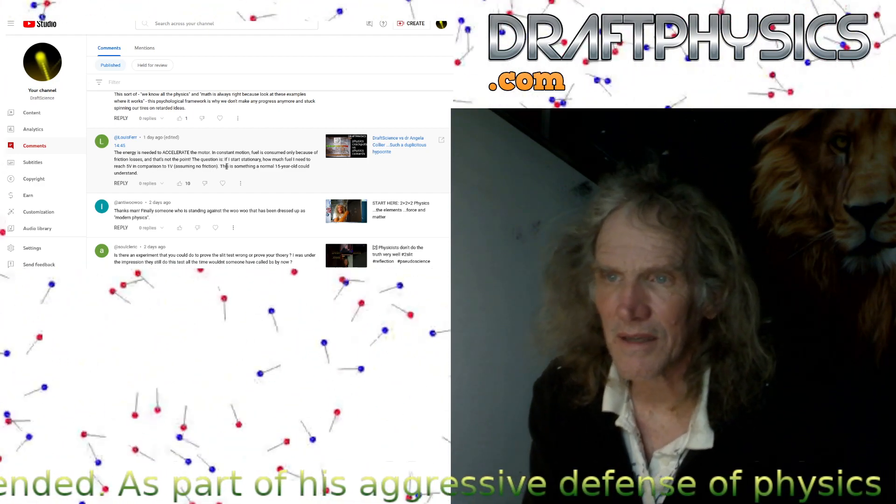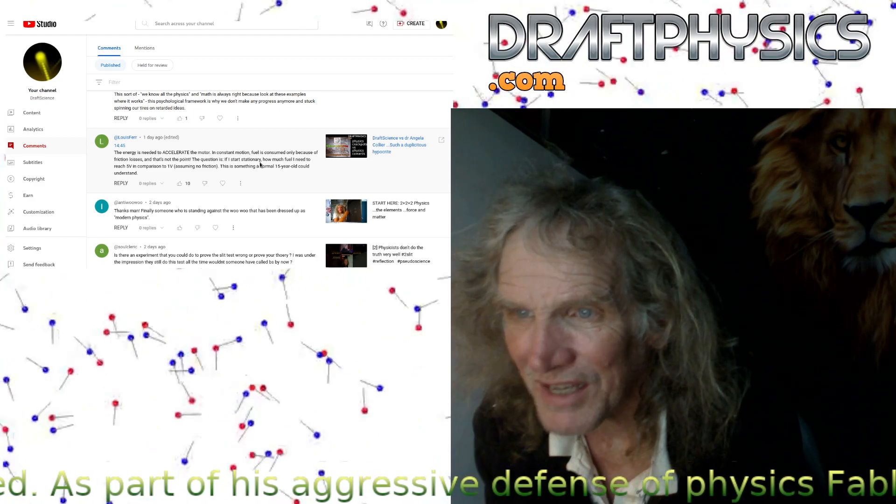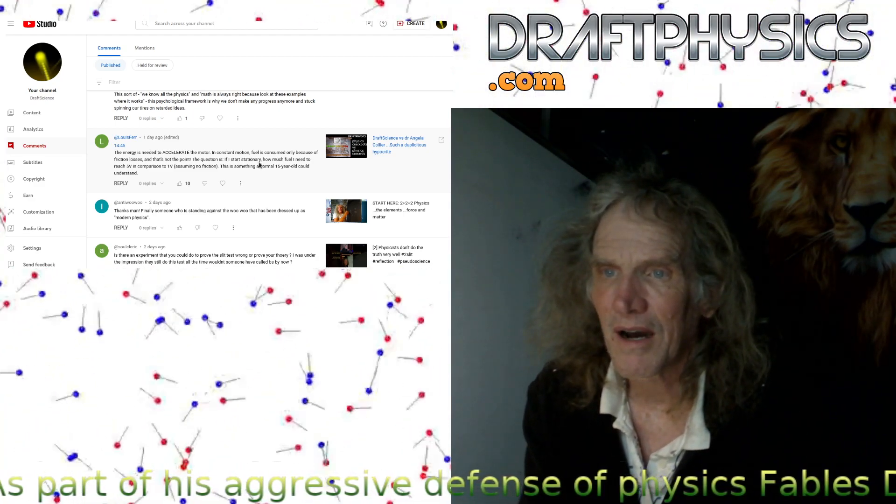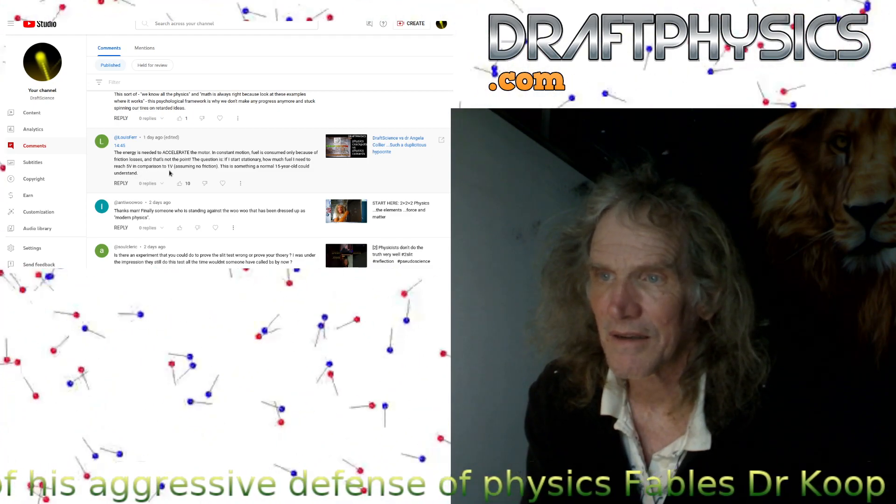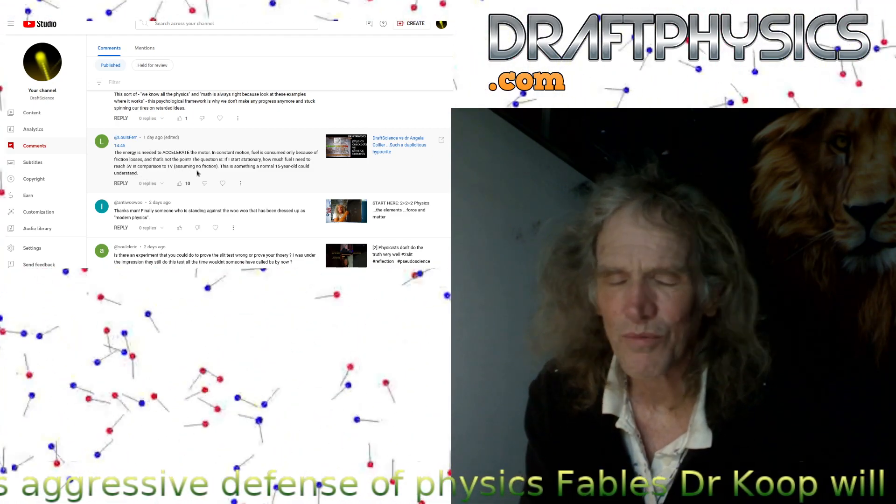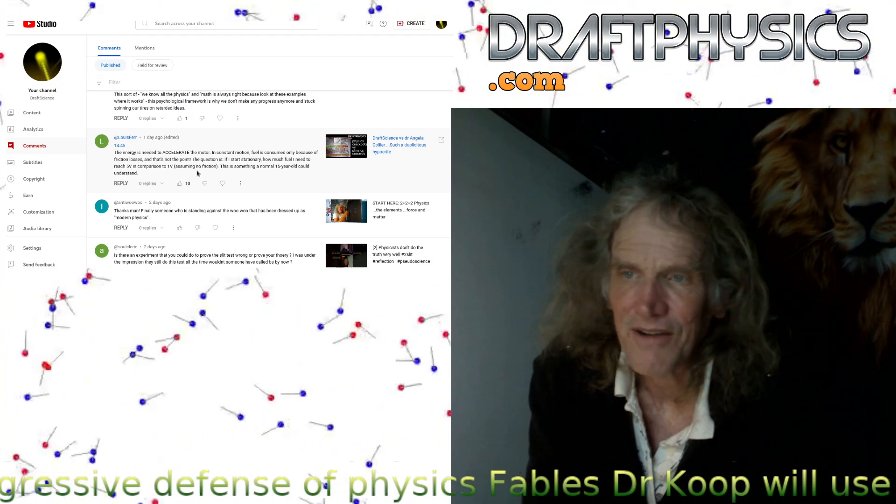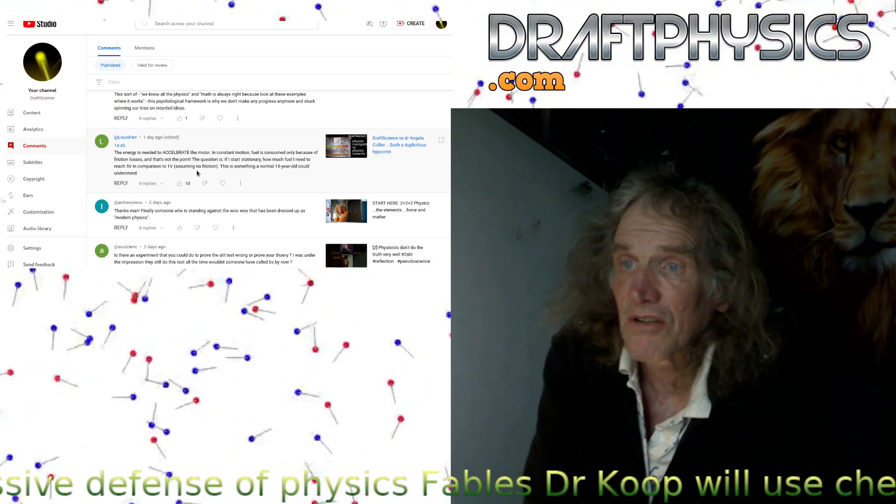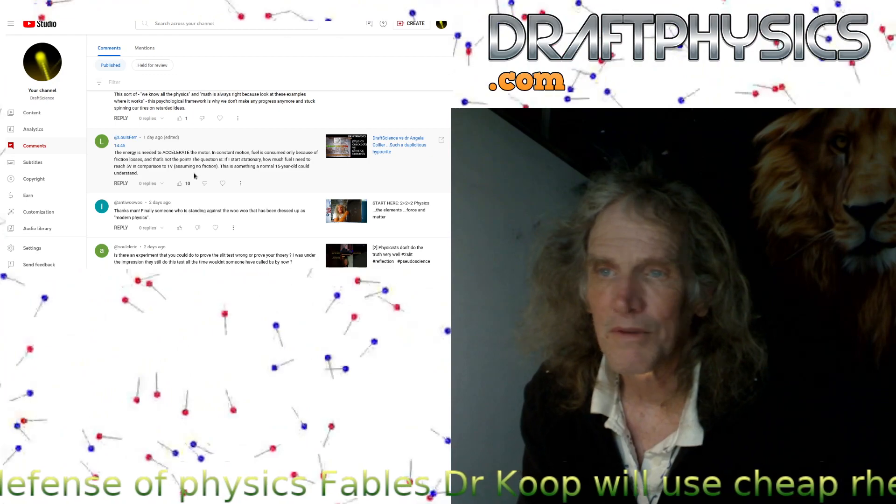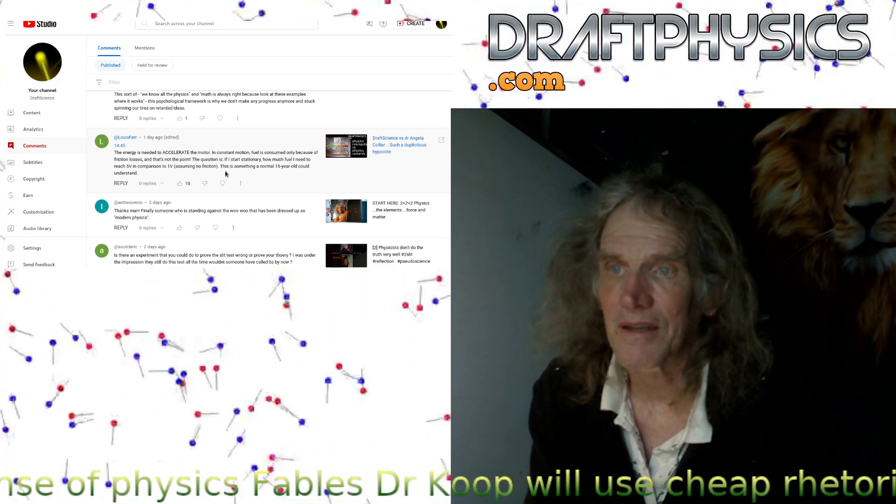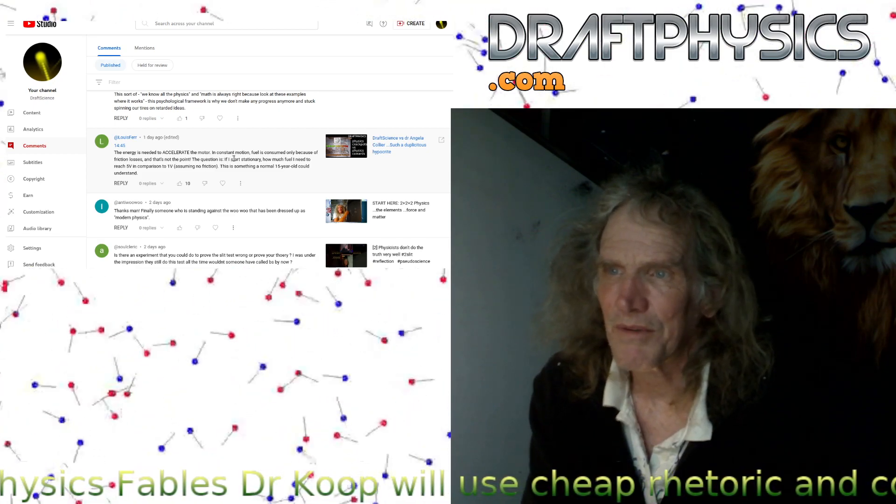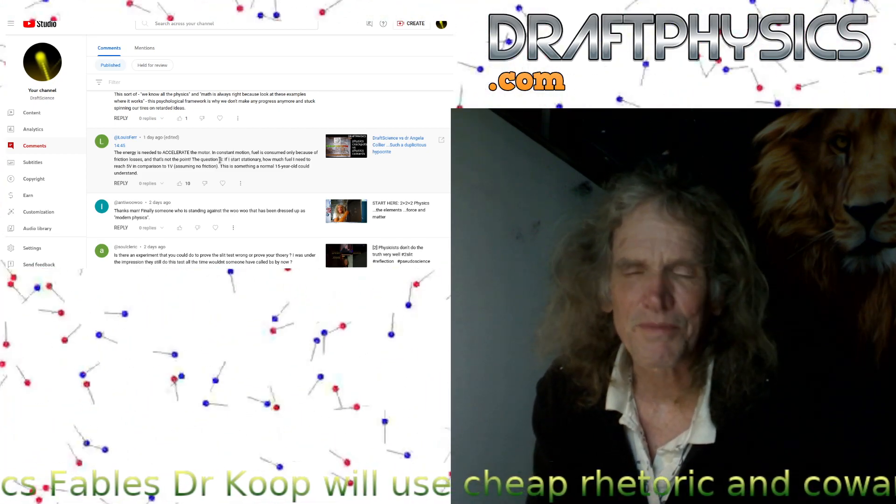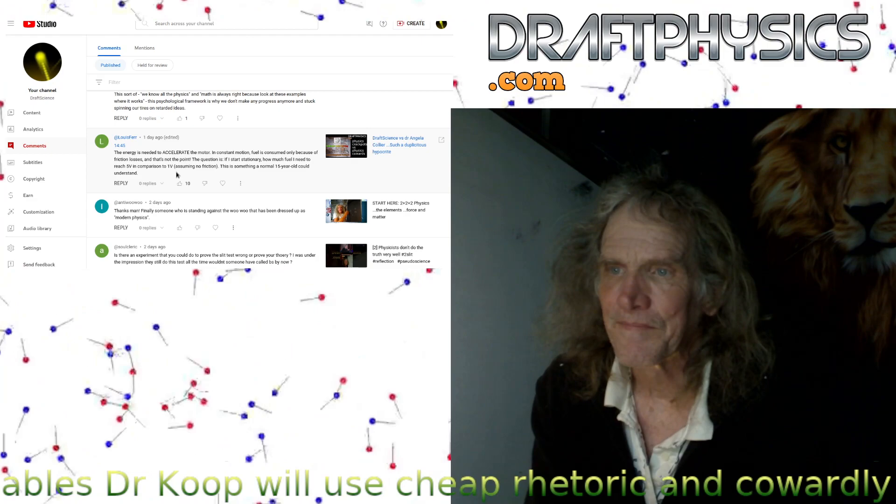You create turbulence and all kinds of other stuff that really is a burden to your progress. And that's not the point. The question is, if I started stationary, how much fuel I need to reach five velocity in comparison to one velocity? Where's your evidence? You don't have anything here. You're just saying I say it's 25 times the fuel. You saying so means nothing.